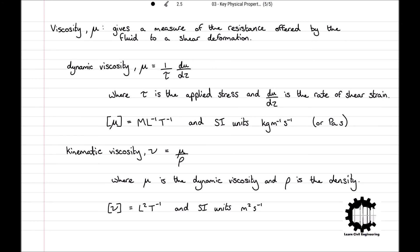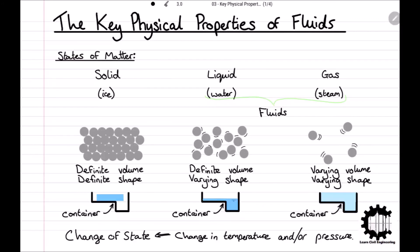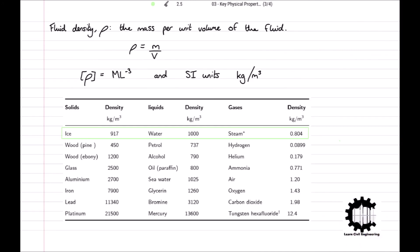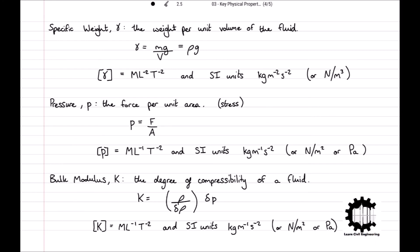To recap, in this lecture we have learned how to distinguish the different states of matter, the different modes of deformation of a fluid, and we have defined the key physical properties of fluids, including fluid density, specific weight, pressure, bulk modulus, and viscosity.